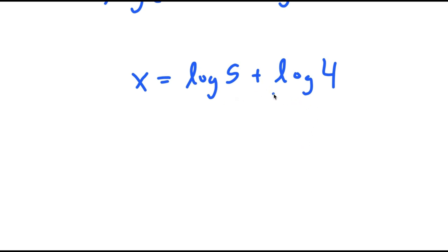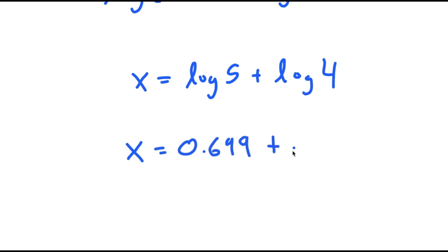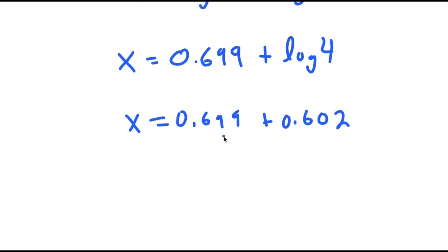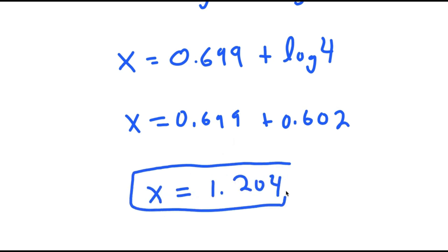Log of 5, if I plug that into a calculator, log of 5 is equal to 0.699. And now I'm going to do the same for log 4 — plugging this into a calculator, log of 4 is equal to 0.602. So I have 0.699 plus 0.602, which is equal to 1.301. So this is my solution to this equation.